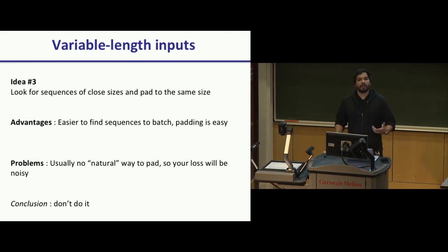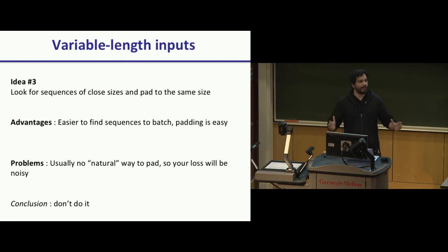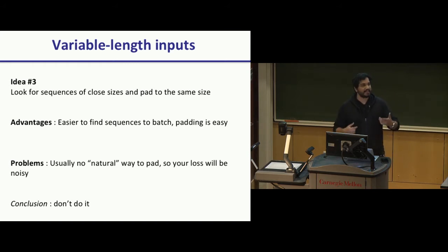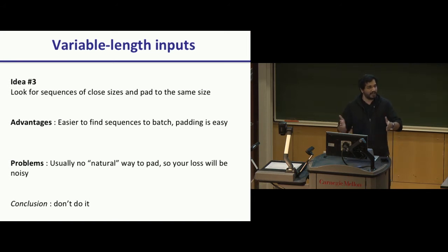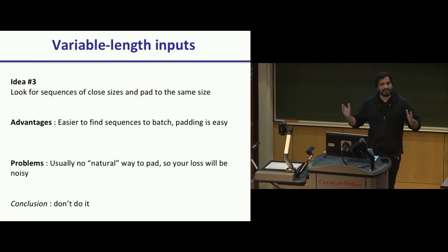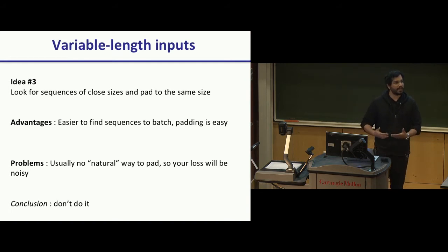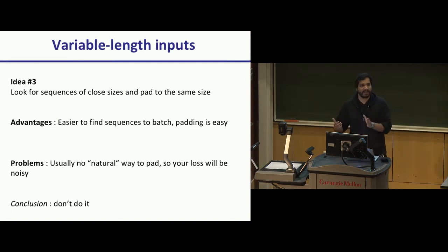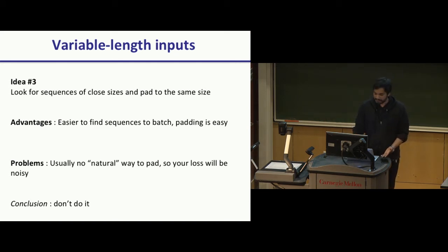Idea three: look for sequences that are close enough in length, then pad the rest so they end up at the same size. It's kind of fast and padding is easy in PyTorch. The problem is that there's no natural way to pad a time series. When you compute your loss, you're computing loss on noisy outputs generated from padded inputs — that will mess up your backpropagation because your gradients will be messy. Don't do it.